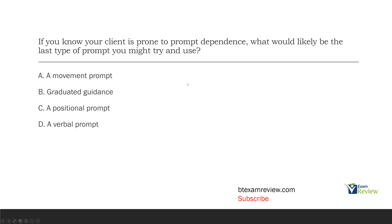If you know your client is prone to prompt dependence, what would likely be the last type of prompt you might try and use? Prompt dependence means your client or learner is now reliant on a prompt in order to engage in a response — they wait for the prompt before engaging in the desired response. Prompt dependence is not something you want; it's something you want to break as soon as possible. If your client is prone to prompt dependence, you want to avoid it. When dealing with prompt dependence, remember: the more intrusive the prompt, the more likely prompt dependence is to occur. So we need to identify the most intrusive prompt.